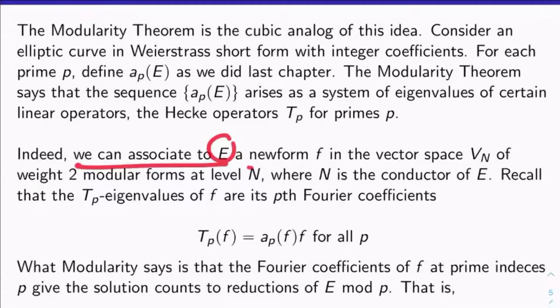This V_N, it's going to be the vector space of all weight two modular forms at level N. So I'm taking a new form there. Remember, new forms are Hecke eigenvectors. And what's this level N? N is the conductor of E by the modularity theorem.